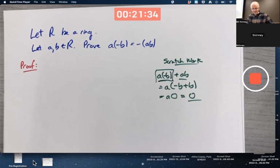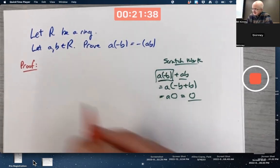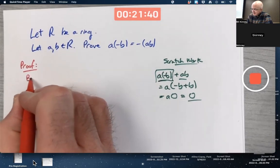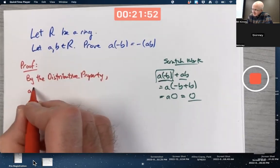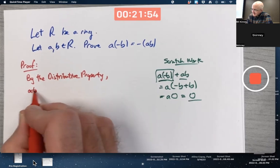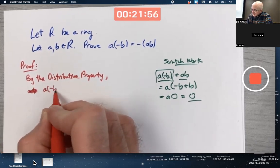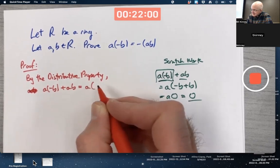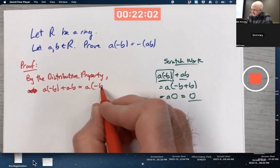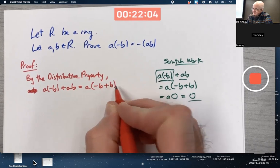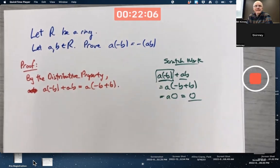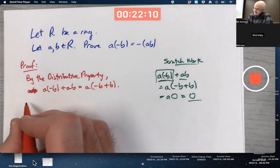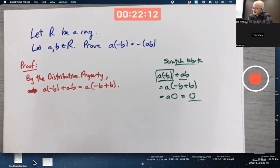Okay, so now let's write this out nicely. You could say, by the distributive property, A times the additive inverse of B plus AB is A times, in parentheses, the additive inverse of B plus B. I'm going to separate this into a couple sentences, as I could have combined this into one sentence.